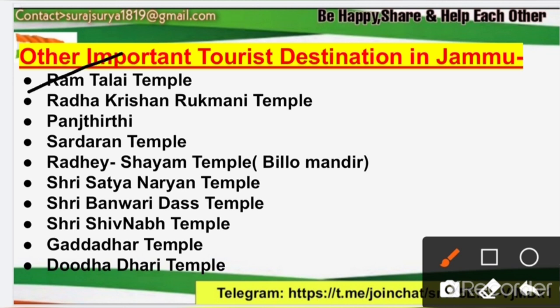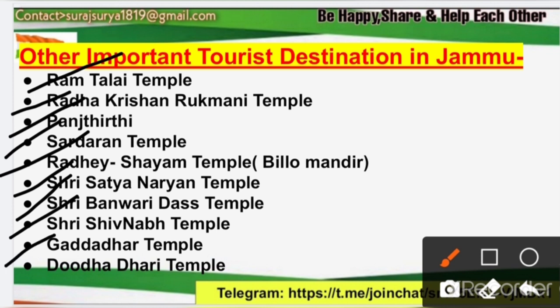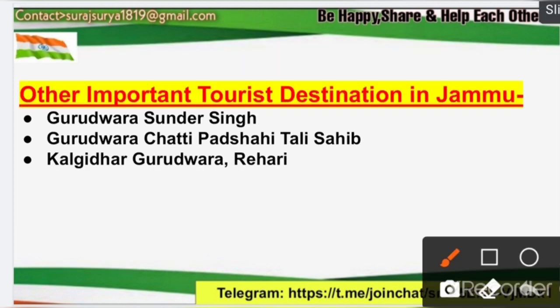Other important tourist destinations include: Ramtalai Temple, Radha Krishna Rukmini Temple, Panch Tirthi, Sadharan Temple, Radhe Shyam Temple (also known as the Blue Mandir), Shri Satya Narayan Temple, Shri Banwari Das Temple, Shri Shiv Nab Temple, Gadha Dhar Temple, Dudh Dhari Temple, and many more prominent temples — all located in the city of Jammu, which is why Jammu is known as the 'City of Temples'. Important Gurudwaras include: Guru Dwarah Sundar Singh, Guru Dwarah Chhati Padshai, Talish Sahib, and Kali Kali Gurdwara. The Mubarak Mandi Complex is also an important heritage site in Jammu district.